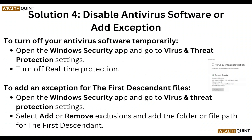Next, disable your antivirus software temporarily. Open the Windows Security app, go to Virus and Threat Protection settings, and turn off Real-Time Protection. To add an exception for First Descendant, open Windows Security, go to Virus and Threat Protection settings, select Add or Remove Exclusions, and add the folder or file path for First Descendant.